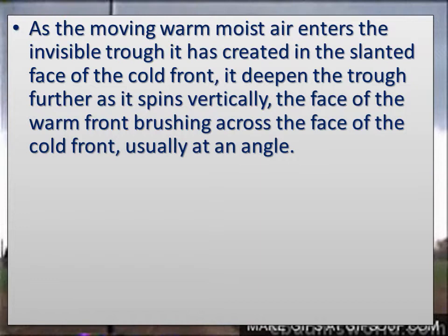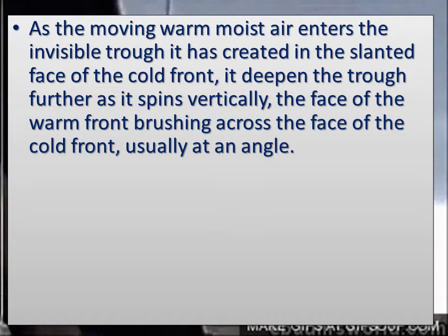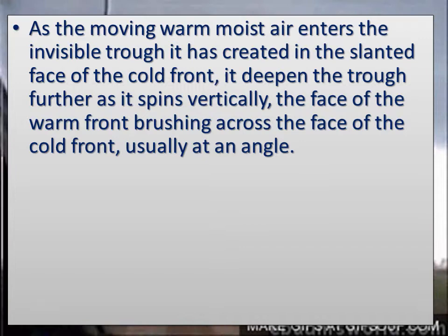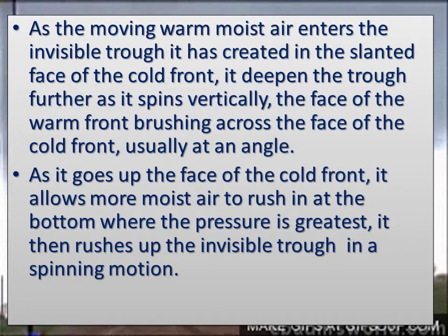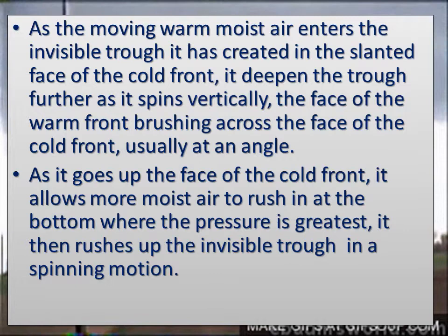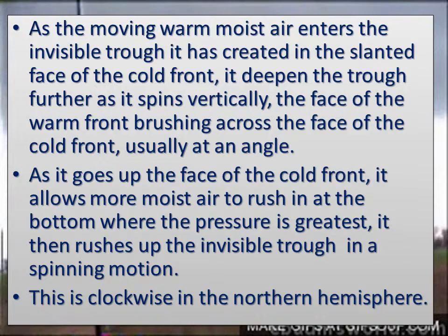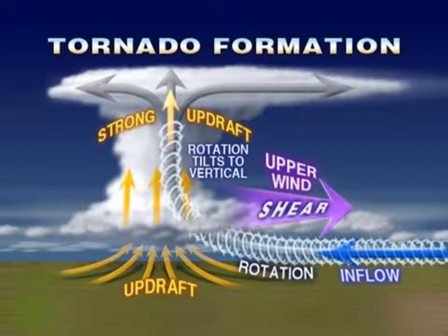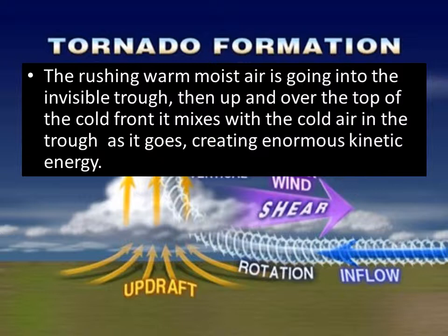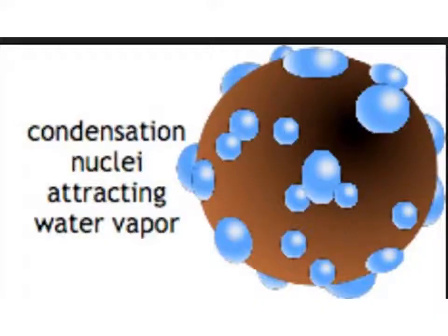As the moving warm moist air enters the invisible trough it has created in the slanted face of the cold front, it deepens the trough further as it spins vertically. The warm air rushes across the face of the cold front, usually at an angle. As it goes up the face of the cold front, it allows more moist air to rush in at the bottom where the pressure is greatest. It then rushes up the invisible trough in a spinning motion. This is clockwise in the northern hemisphere because of the Coriolis force. The rushing warm moist air goes into the invisible trough, then up and over the top of the cold front, mixing with the cold air in the trough as it goes, creating enormous kinetic energy.